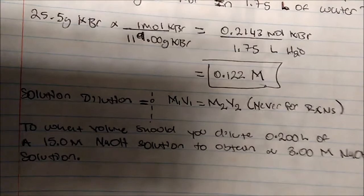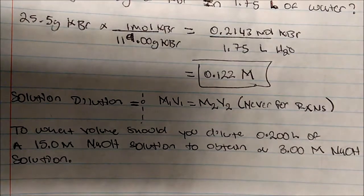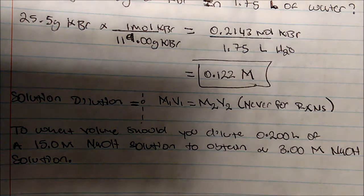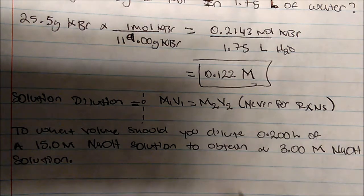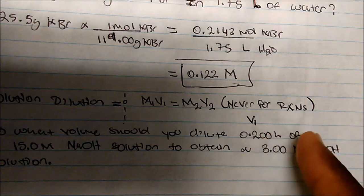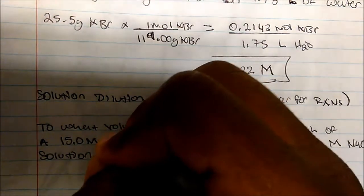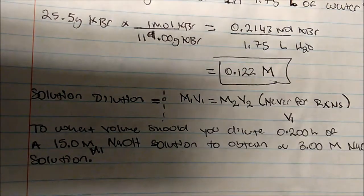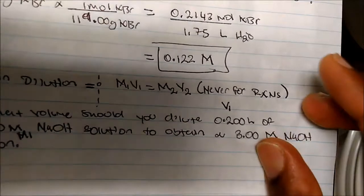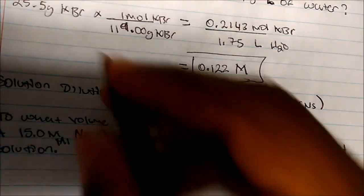The question asks: to what volume should we dilute 0.200 liters of 15 molar sodium hydroxide solution to obtain a 3.0 molar sodium hydroxide solution? Reading left to right, I assign my variables: 0.200 liters is V₁, 15 molar is M₁, and 3.0 molar is M₂. We're solving for V₂ — the final volume.